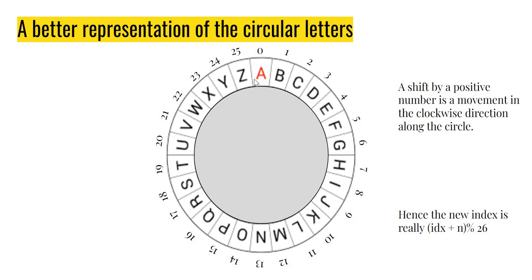Any shift by a positive number is a movement in the clockwise direction along this circle. For example, if my input was A and I wanted to do a shift of 3, I count 3 steps clockwise and land on D. If my input was Z and I wanted to shift by 2, I count 1, 2 and end up on B. Notice what happened to the index — I started at 25, one clockwise movement puts me at 0, and two clockwise movements puts me at 1.